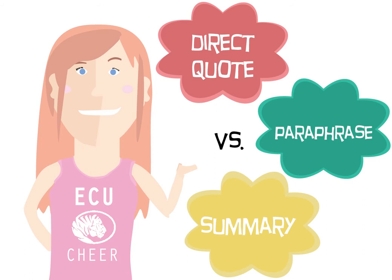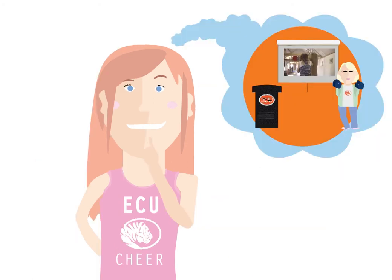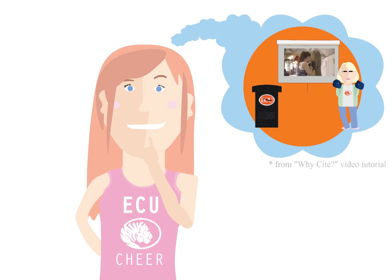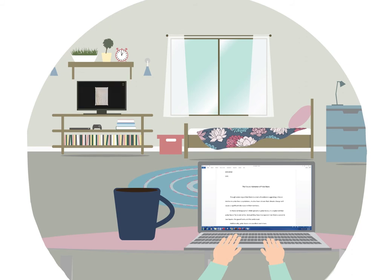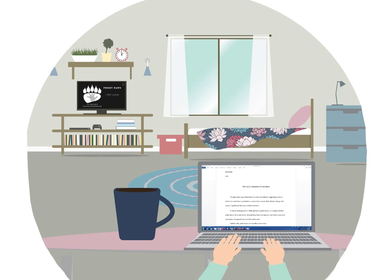There are three primary ways to present ideas from another source in your research paper: direct quote, paraphrase, and summary. The difference between quoting and paraphrasing is like the difference between showing a clip from a movie and acting out the clip yourself to your audience. To show the movie clip is a direct quotation of the work itself, whereas acting out the clip is paraphrasing in your own words. Likewise, a summary is like explaining the entire plot of the movie in your own words.